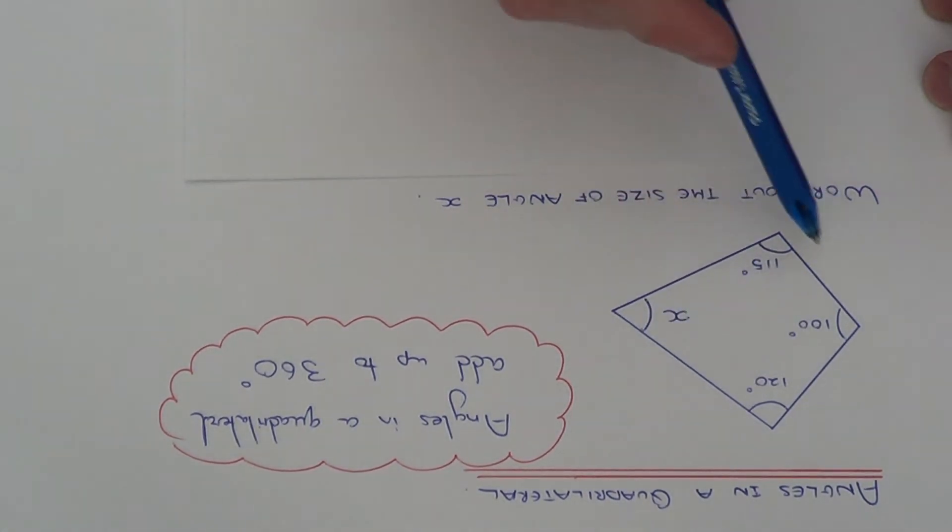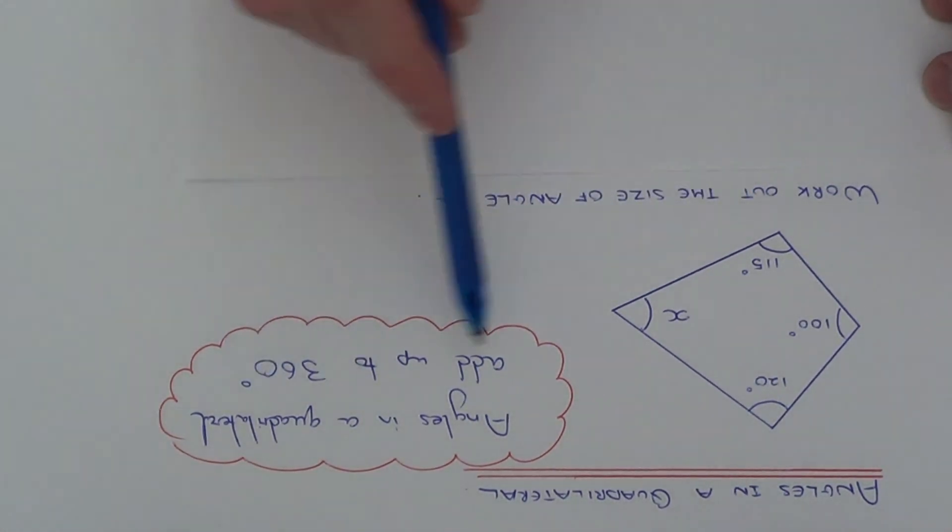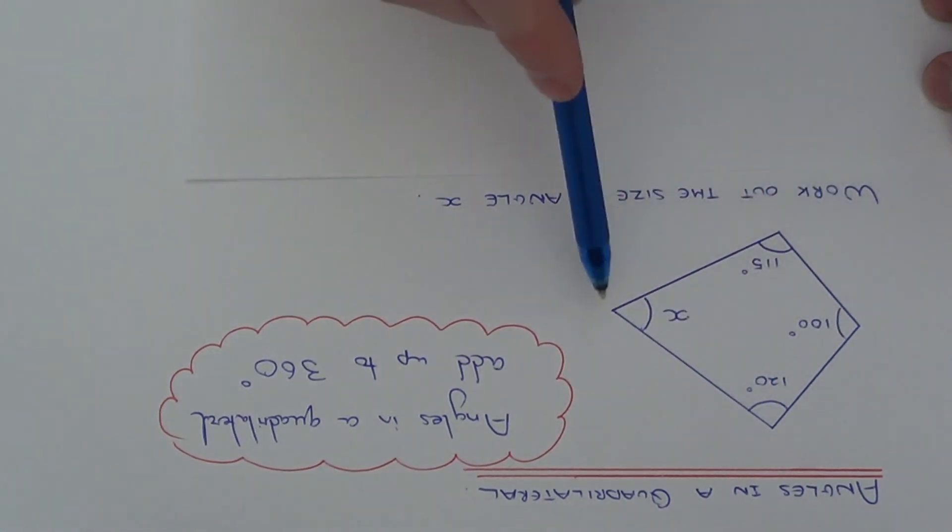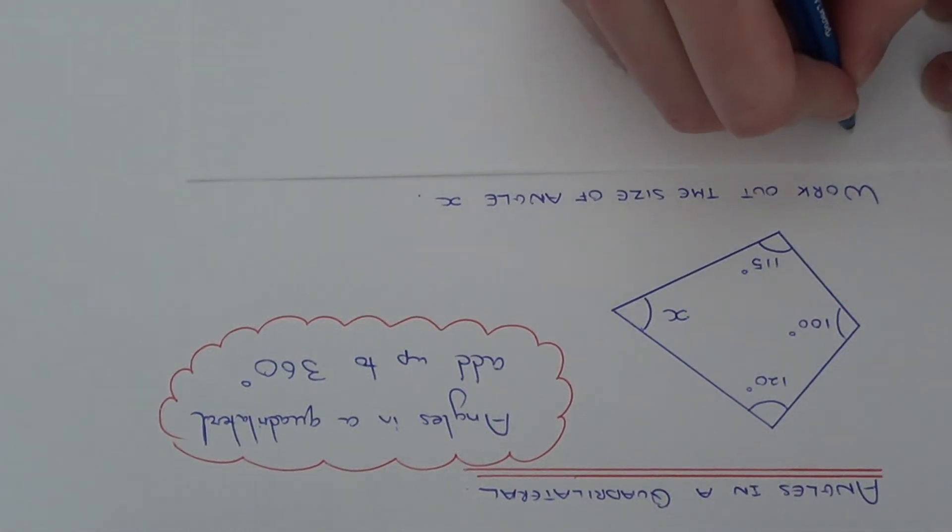Let's take a look at this example here. We need to work out the size of angle X. Using this rule here, we know that the four angles must add up to 360. So let's add up the three angles which we already have inside the quadrilateral.